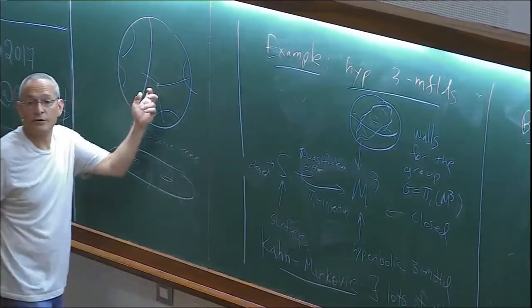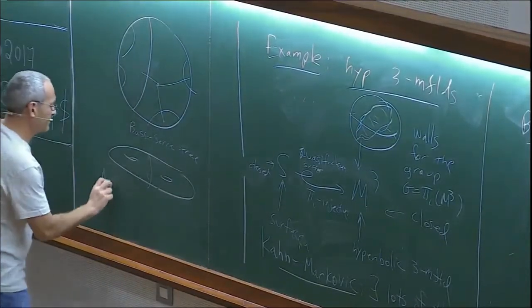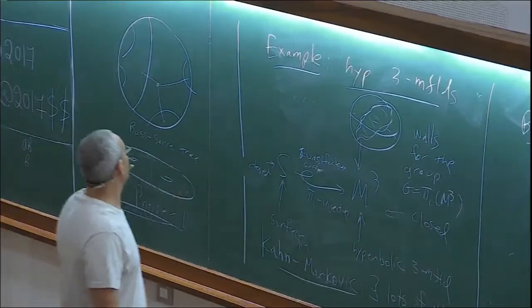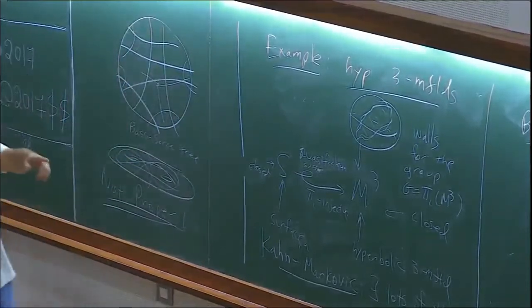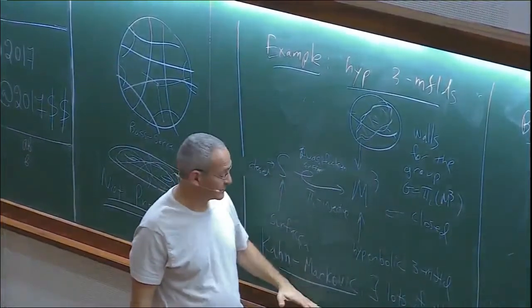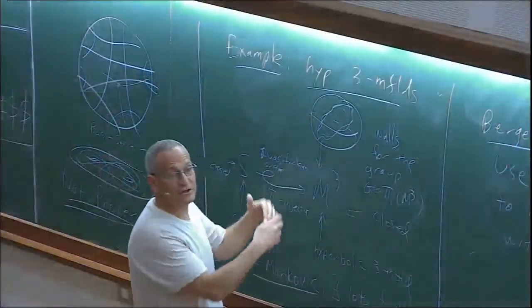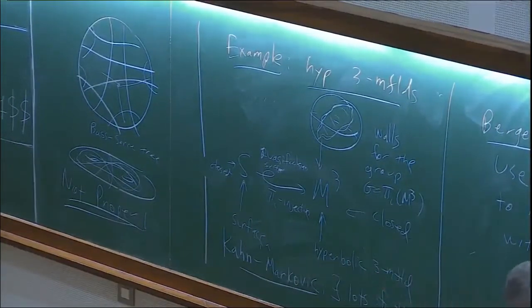So there are lots of walls running around. Bergeron and Wise used the Kahn-Markovic surfaces to build a finite dimensional CAT(0) cube complex with a proper co-compact action. The properness is the key issue: if you took just one embedded curve on a surface and lifted to the universal cover, you'd build a tree — in fact the Bass-Serre tree — but that's far from a proper action. You need enough curves to fill everything up, which makes the action proper.